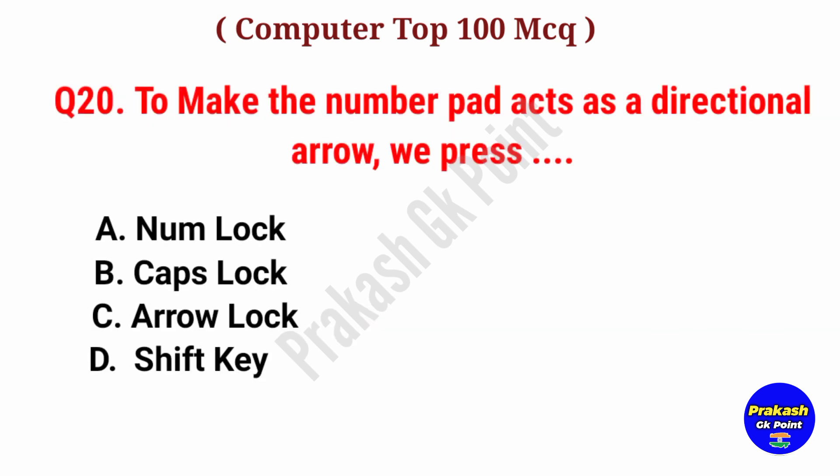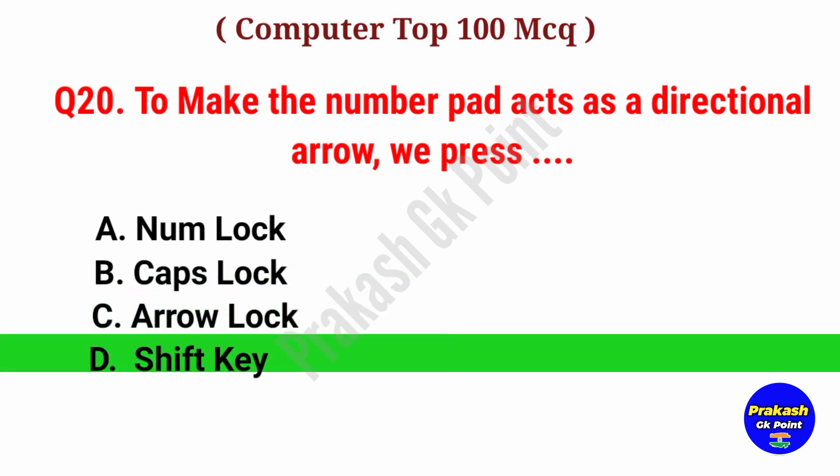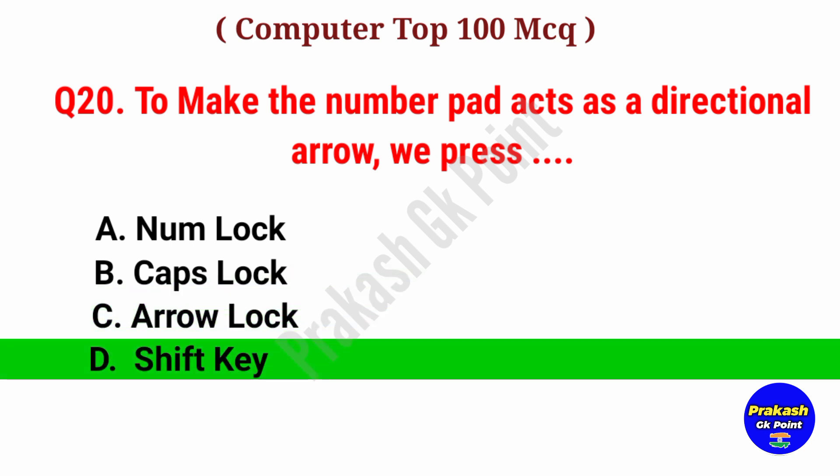To make the number keys act as a directional arrow, we press dash. Answer: Option D, Shift Key.